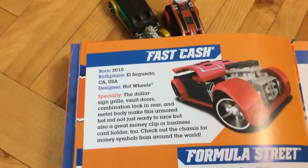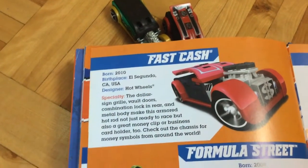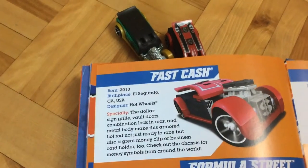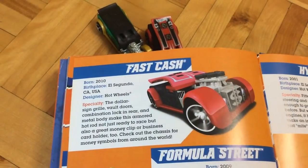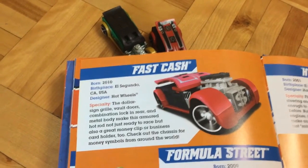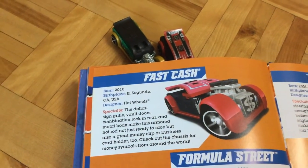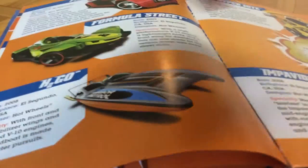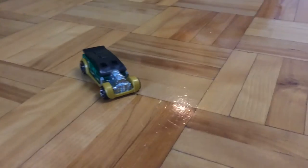So the specialty is the dollar sign grill with vault doors, combination lock in the rear, and metal body makes this armored hot rod not just ready to race but also a great money clip or business card holder. Check out the chassis for the money symbols around the world. So this is what the book is describing about this car.